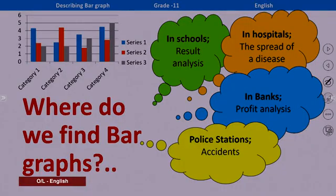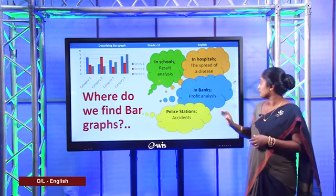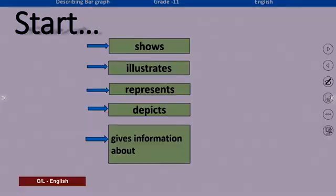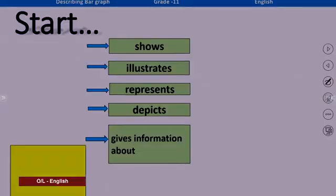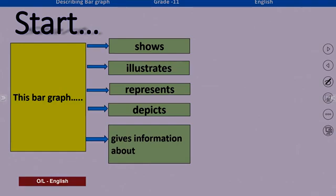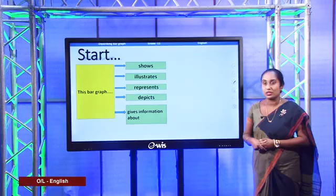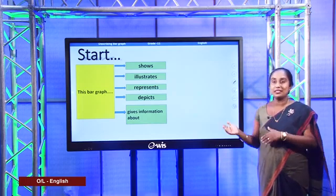Now you know the places where we use bar graphs. Today my lesson is on describing a bar graph — you have to look at the bar graph and write a paragraph about it. You can start with these language expressions: 'This bar graph shows…', 'This bar graph illustrates…', 'This bar graph represents…', 'This bar graph depicts…', 'This bar graph gives information about…'